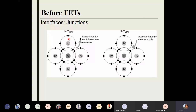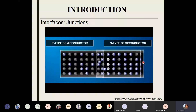Right now, both of them are perfectly balanced. As we move on and create a junction — a junction is basically when a p-type and n-type semiconductor are brought together and fused together. That is called a p-n junction.